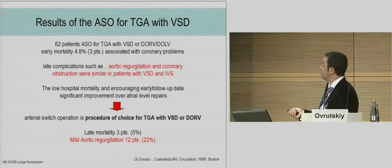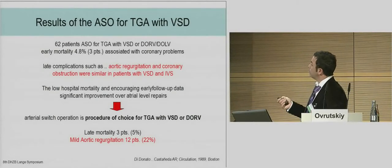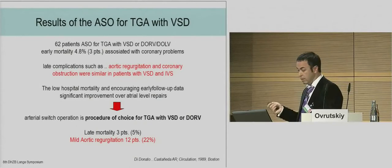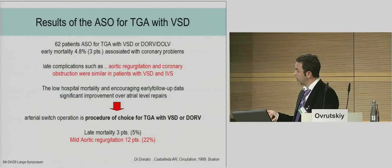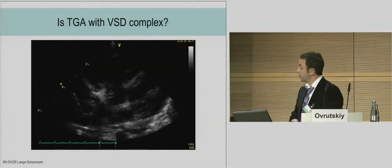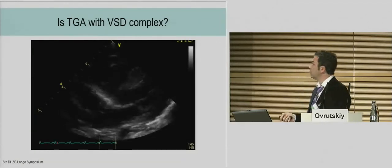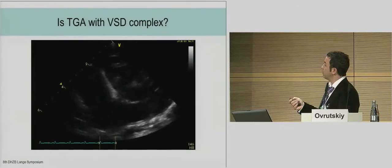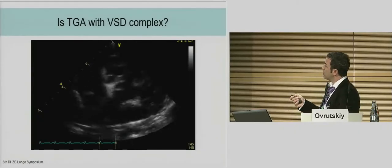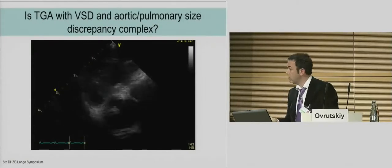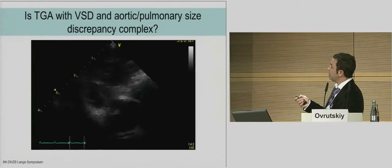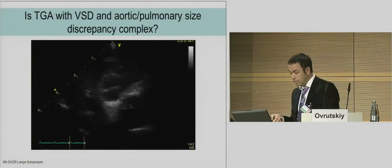The publication by Castaneda stated that both patients with VSD and with intact ventricular septum can be operated excellently by arterial switch operation with low early and late mortality. Also the incidence of regurgitation was not high and was at least mild. For diagnostics, we can say everything we need can be seen from echocardiography: the VSD, the conus, the semilunar valves, and also the discrepancy in size of the aortic and pulmonary valves.